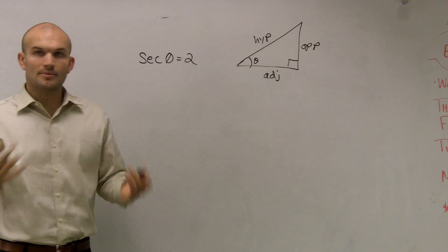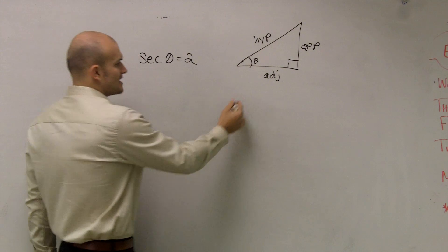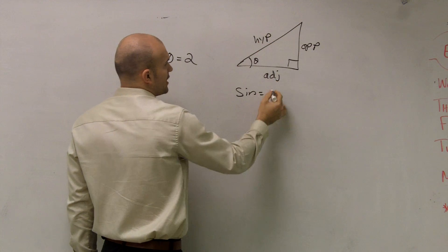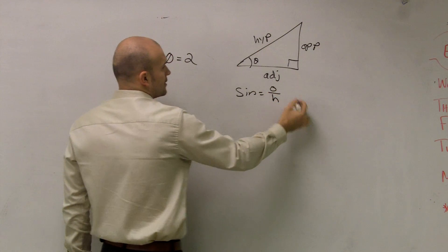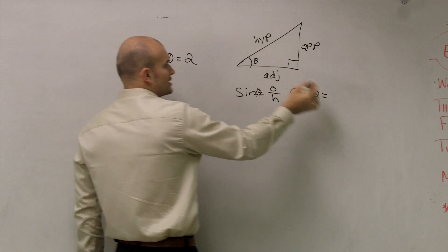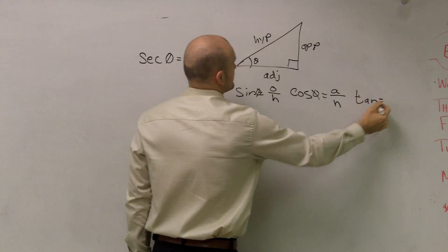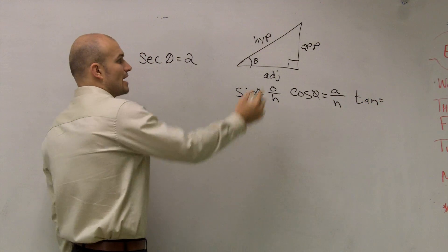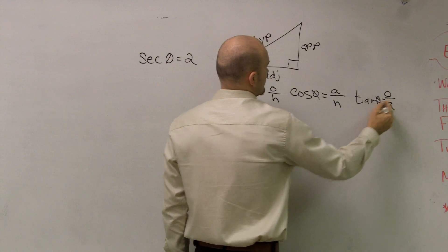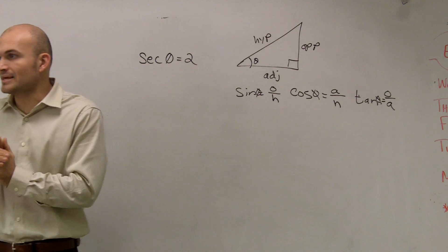There are a couple things you should remember about right triangles. Sine equals your opposite over your hypotenuse. Cosine of theta is equal to your adjacent over your hypotenuse. And tangent of theta is equal to your opposite over your adjacent. You have to remember those — that's from your geometry.